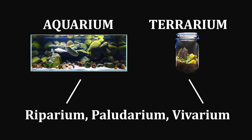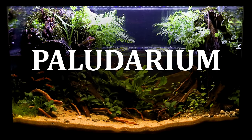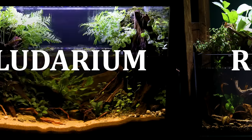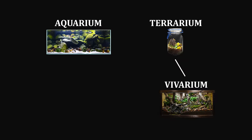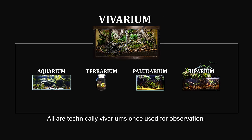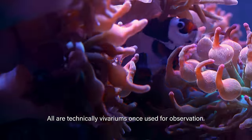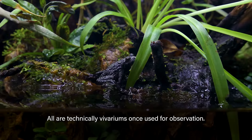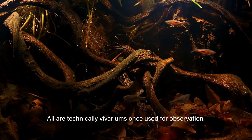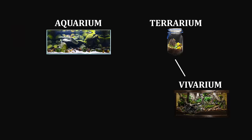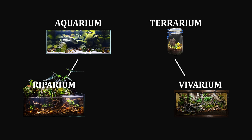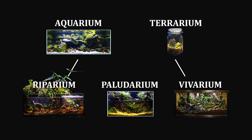The number of setups under this umbrella is vast, but the three pertinent to this discussion are the vivarium, the paludarium, and the riparium. Vivariums are generally placed under the terrarium category, but all of these setups including aquariums are technically vivariums once they house animals for the sake of observation. I'll place vivarium under the terrarium category because that's how it's commonly represented within the nature design hobby. Ripariums fall exclusively under the aquarium category, and paludariums lie somewhere in between.